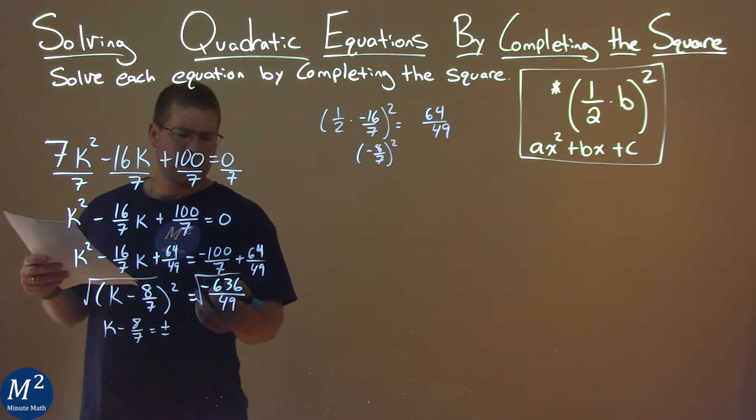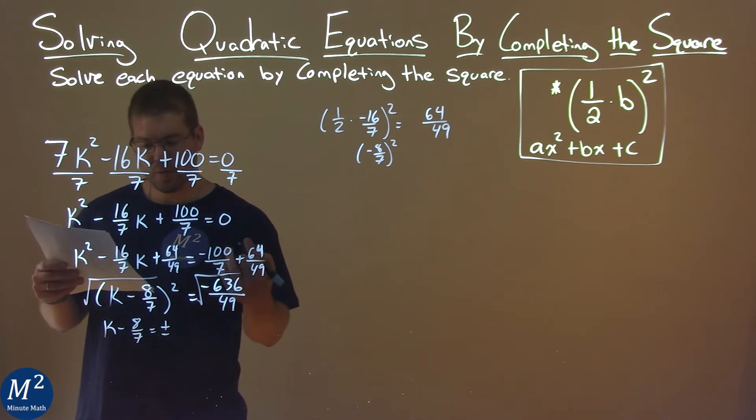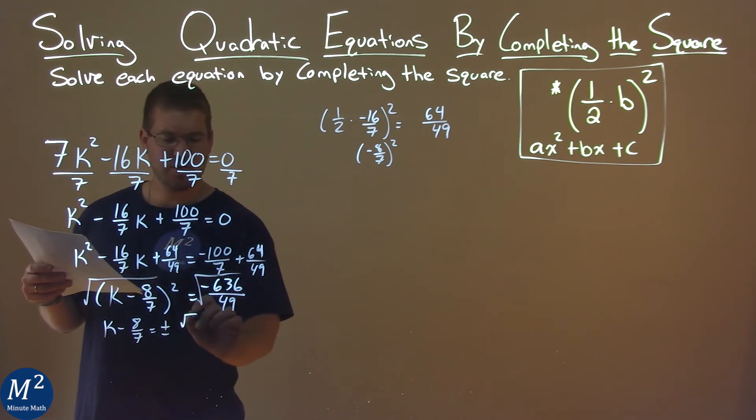Well, if it's a fraction, we can take the square root of the numerator and denominator individually. So, the square root of negative 636 is the square root of negative 1 times the square root of 636 over the square root of 49, which is 7.